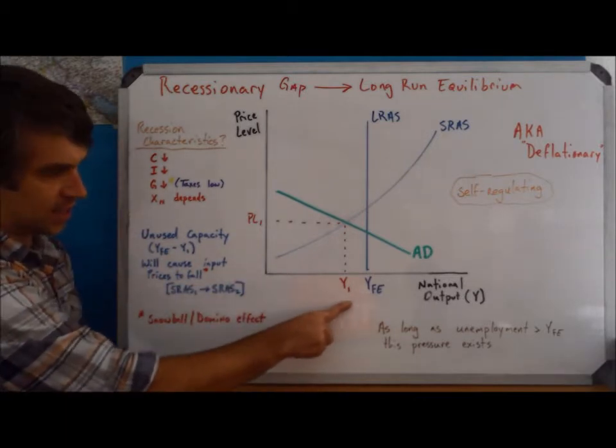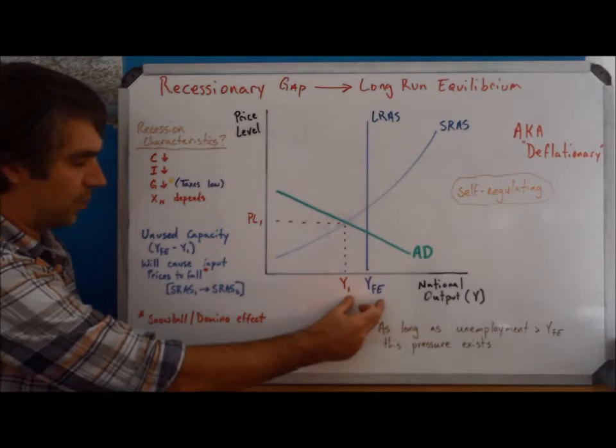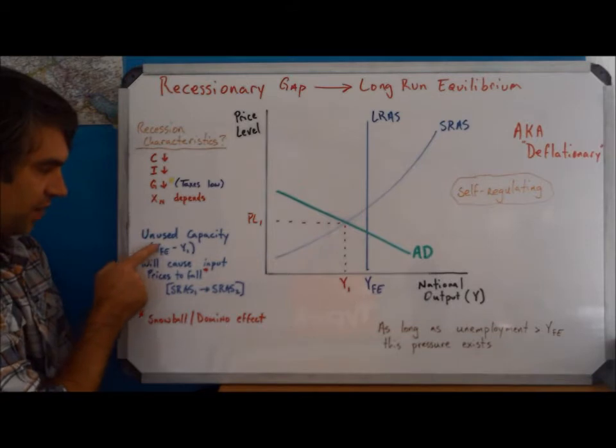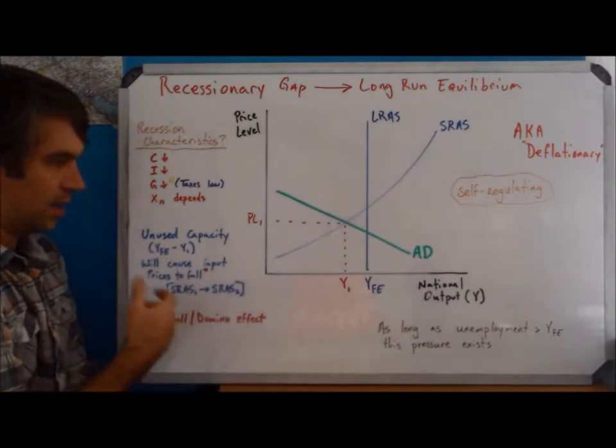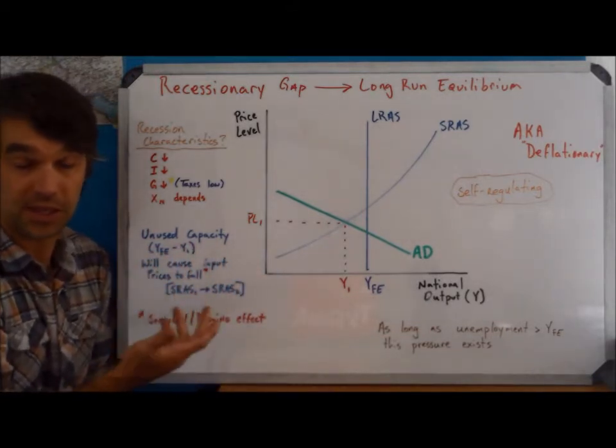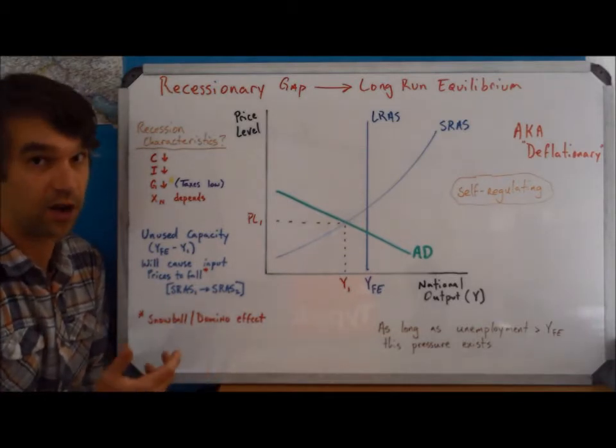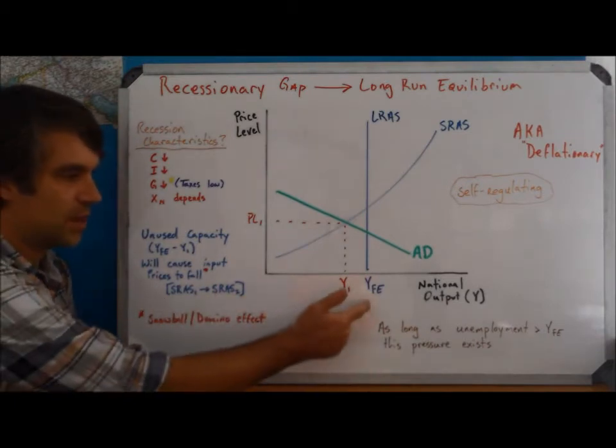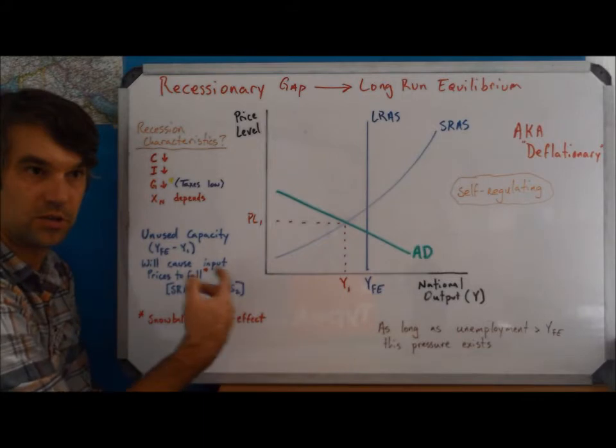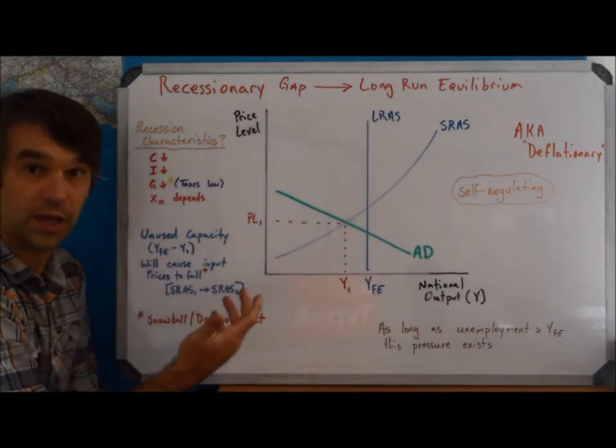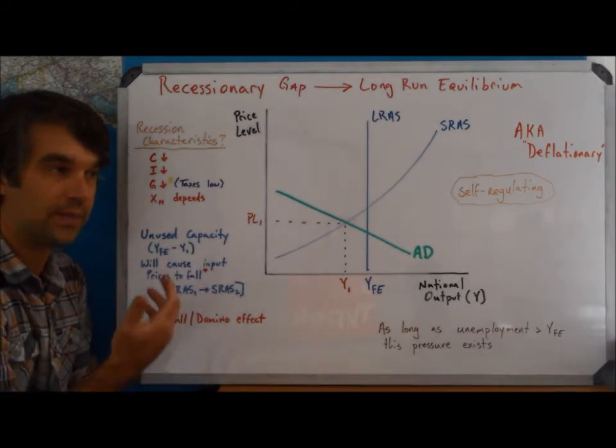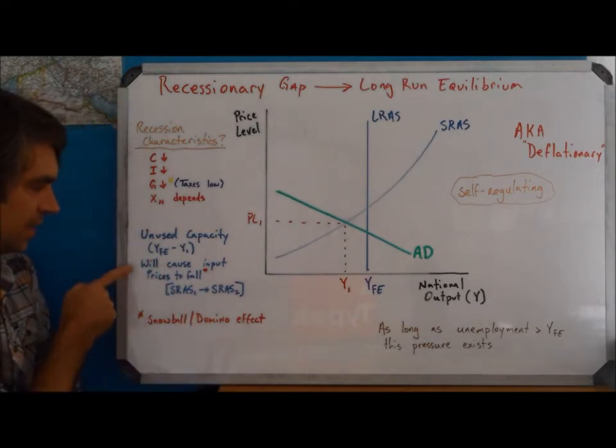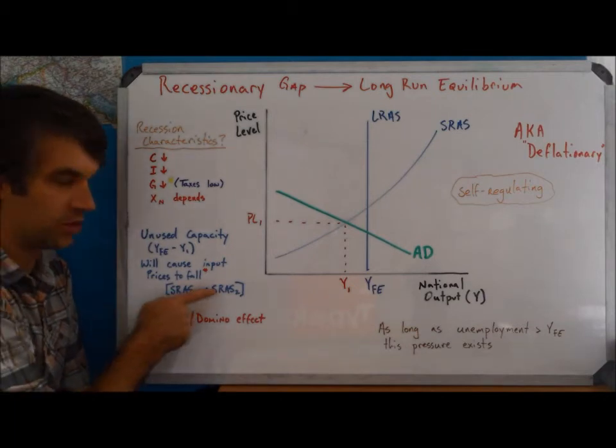Here's how the argument goes. Because Y1 is less than YFE, this is our recessionary gap right here. Because of that, this unused capacity, YFE minus Y1, that represents a certain amount of people who are cyclically unemployed and factors of production that aren't being used either. So eventually, not at first, but eventually these people who are out of work, they will start to, they will begin to be willing to accept a lower wage. As that happens, the second that they're willing to accept a lower wage, what happens is that short-run aggregate supply will shift to the right.